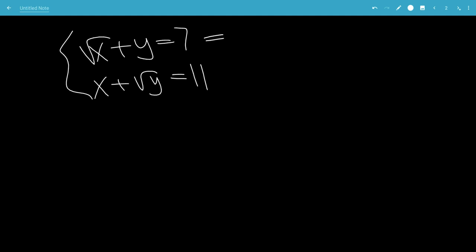So I just wrote it again. This means that square root of x equals 7 minus y. This means that square root of y is 11 minus x.